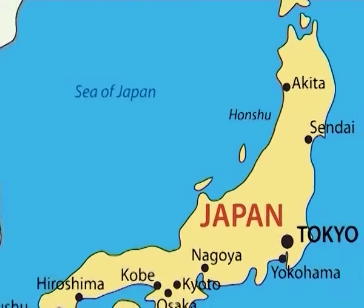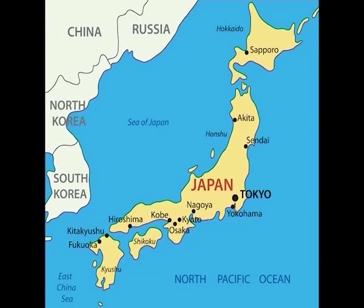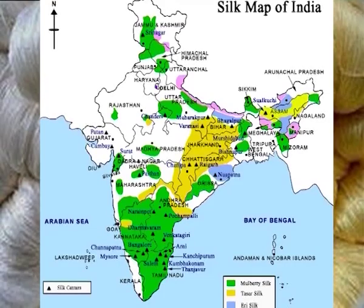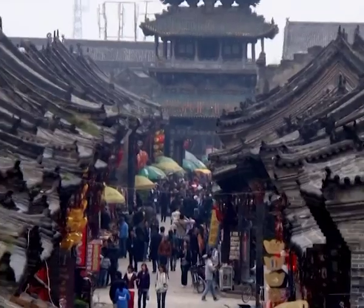The first country to apply scientific techniques to raising silkworms was Japan, which produces some of the world's finest silk fabrics. Other countries that also produce quality silks are China, Italy, India, Spain and France. China was the largest exporter of raw silk in the early 1990s, accounting for about 85 percent of the world's raw silk, worth about 800 million dollars.